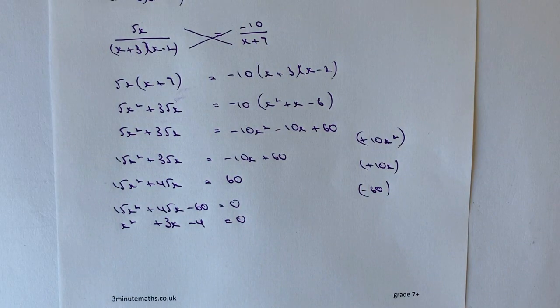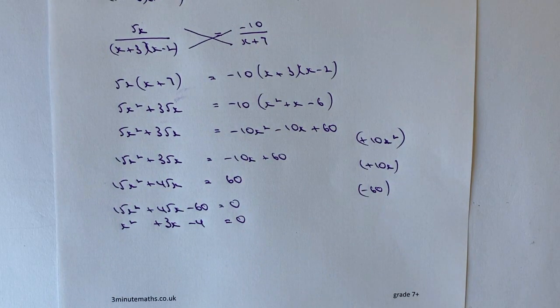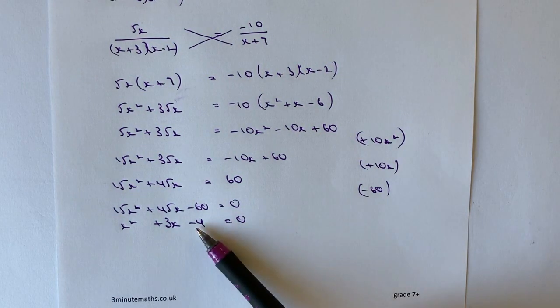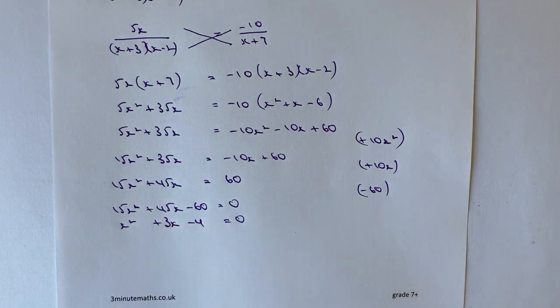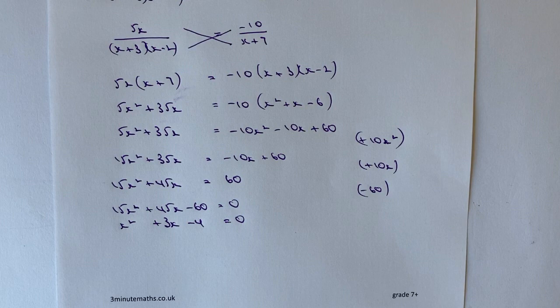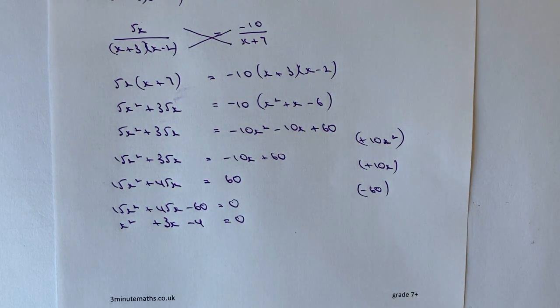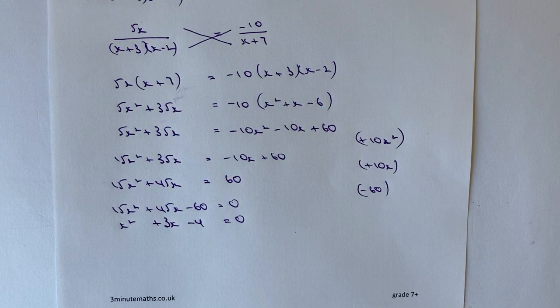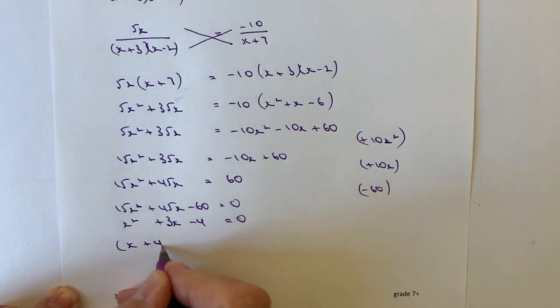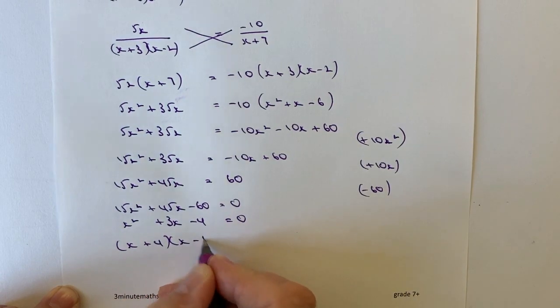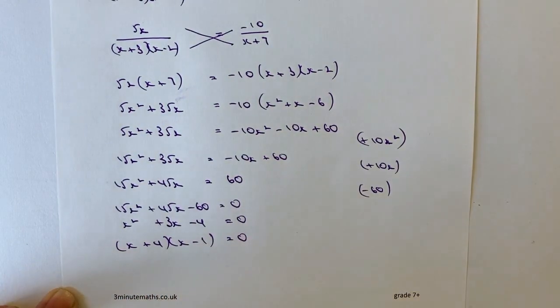Hopefully you can see that you can factorize that, where I'm looking for two numbers that when I multiply them together make minus 4, and when I add them together make plus 3. Those two numbers are going to be plus 4 and minus 1, because if I multiply 4 and minus 1, I get minus 4. If I add 4 and minus 1, I'm going to get plus 3. So I can rewrite that as (x+4) multiplied by (x-1) equals 0.